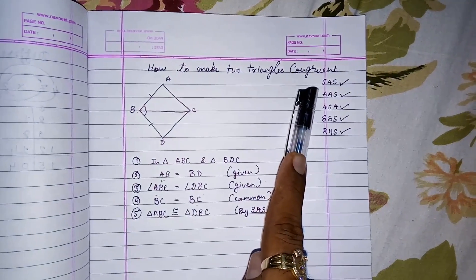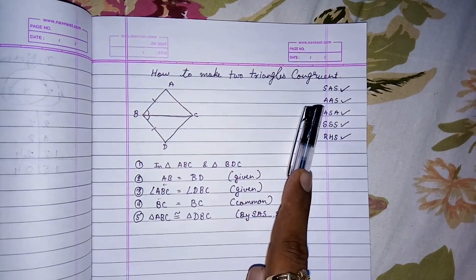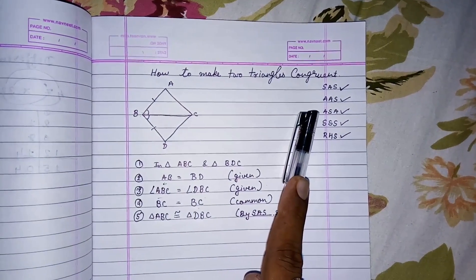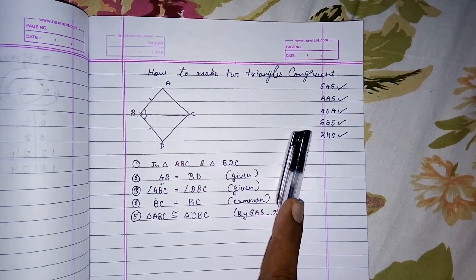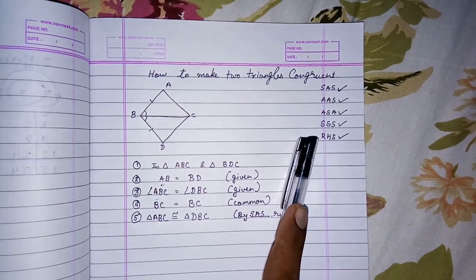First is side angle side, angle angle side, angle side angle, side side side, and right angle hypotenuse side, so RHS.